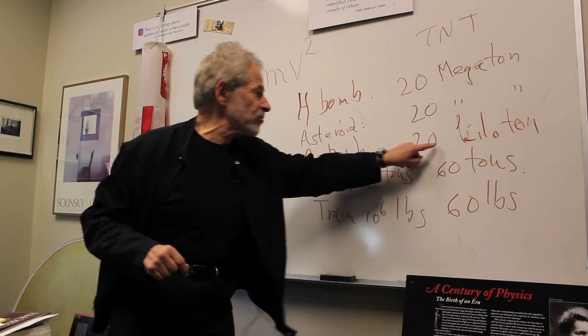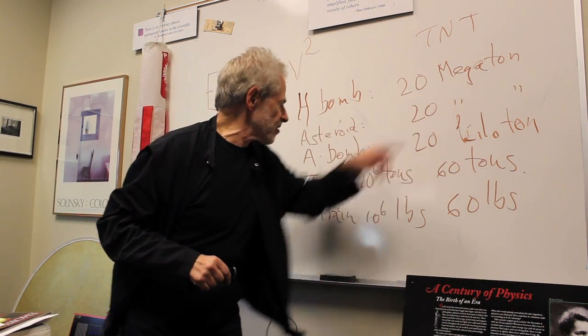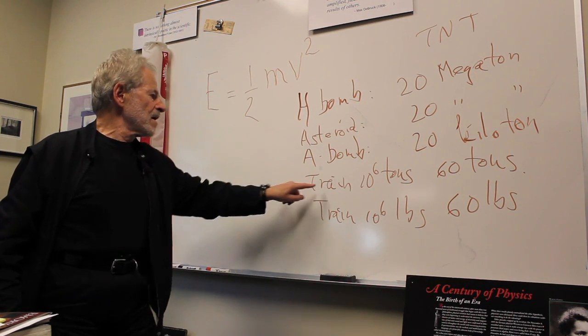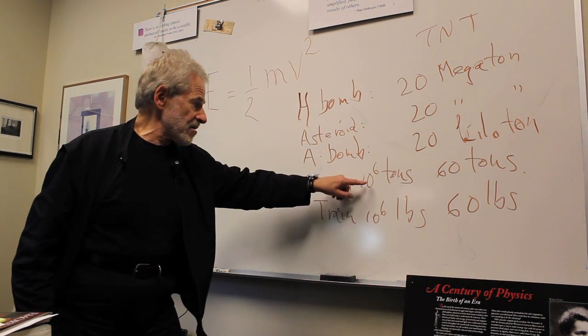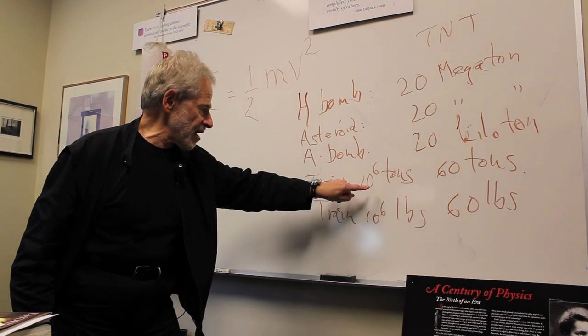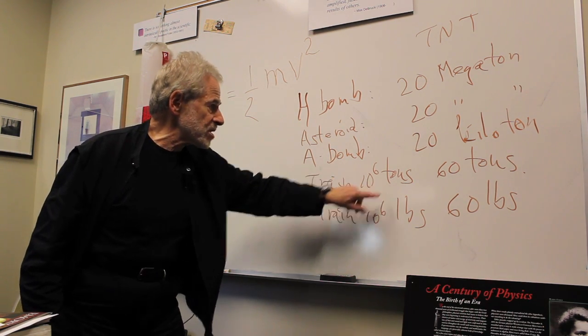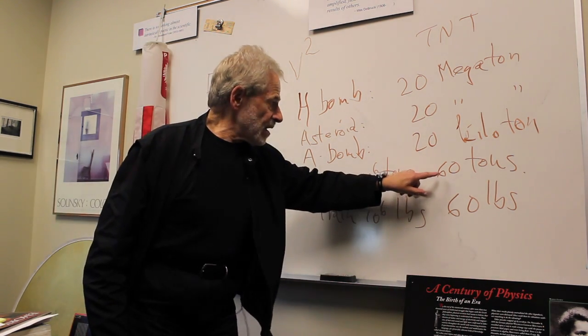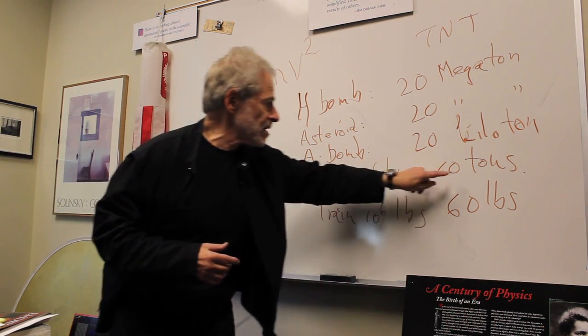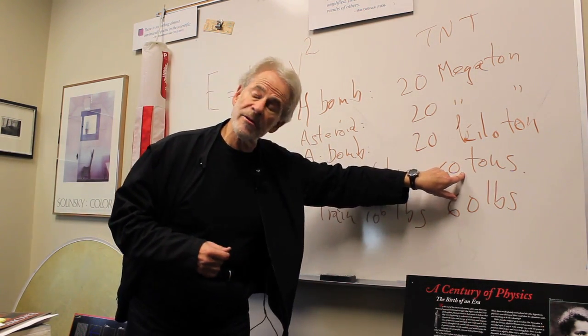A-bomb is about 20 kilotons, 20,000 tons of TNT. Now let's get to our train. If it had truly, as the advertising material says, a weight of one million tons...